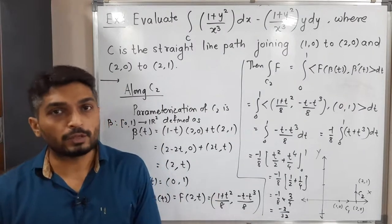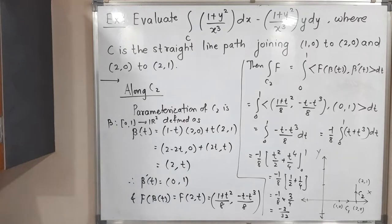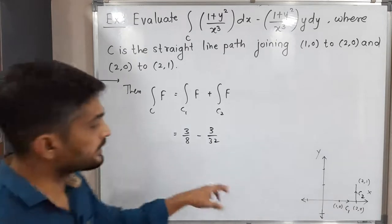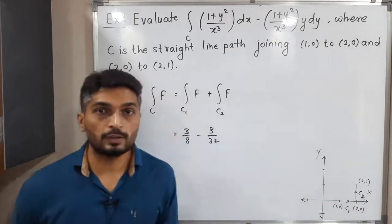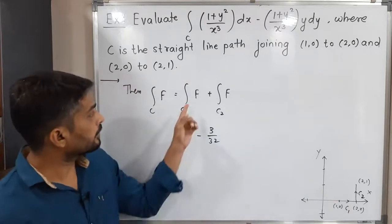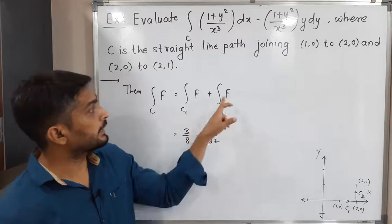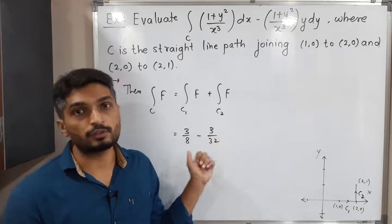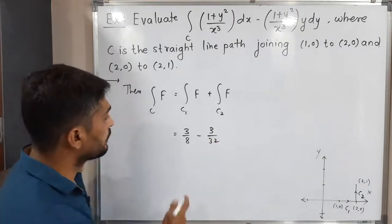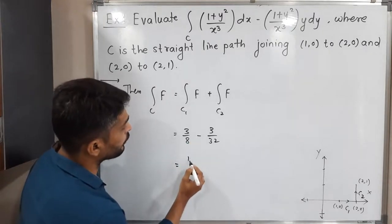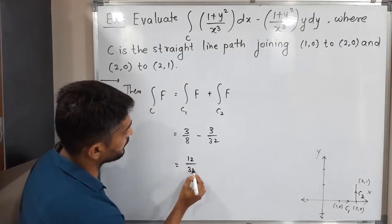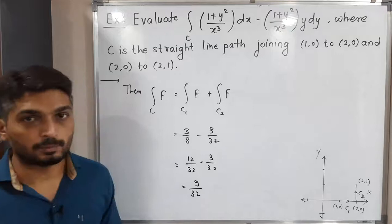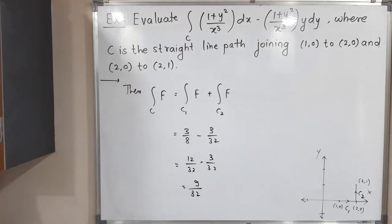Now we add the two results to get the required answer. The line integral of f along c1 is 3/8 and along c2 is −3/32. To make the denominators the same, multiply 3/8 by 4/4 to get 12/32. Then 12/32 − 3/32 = 9/32. So the required answer is 9/32. The example is complete.